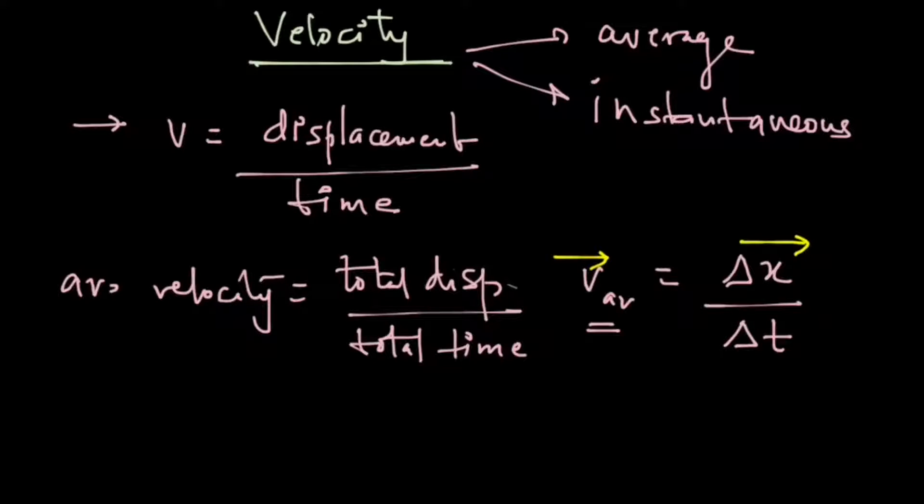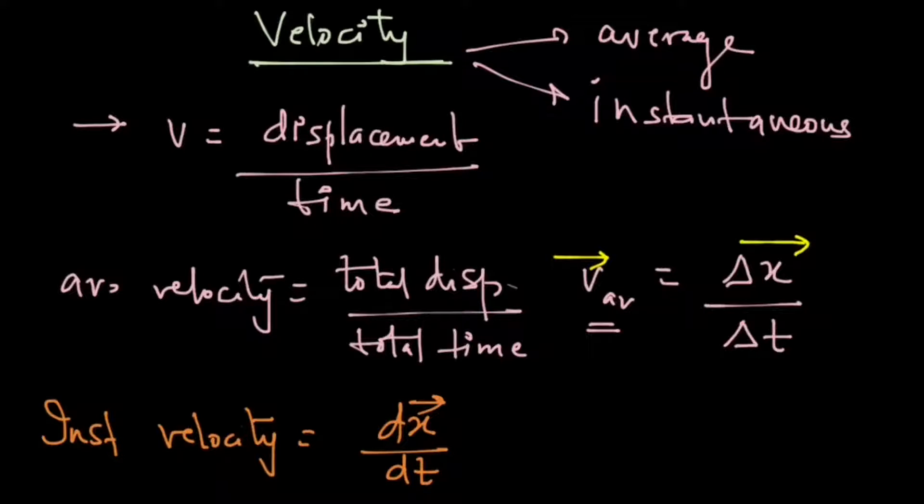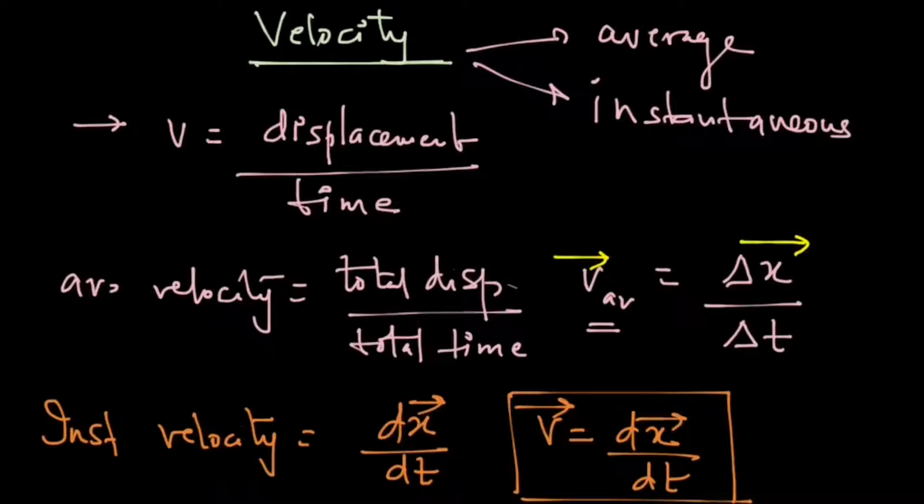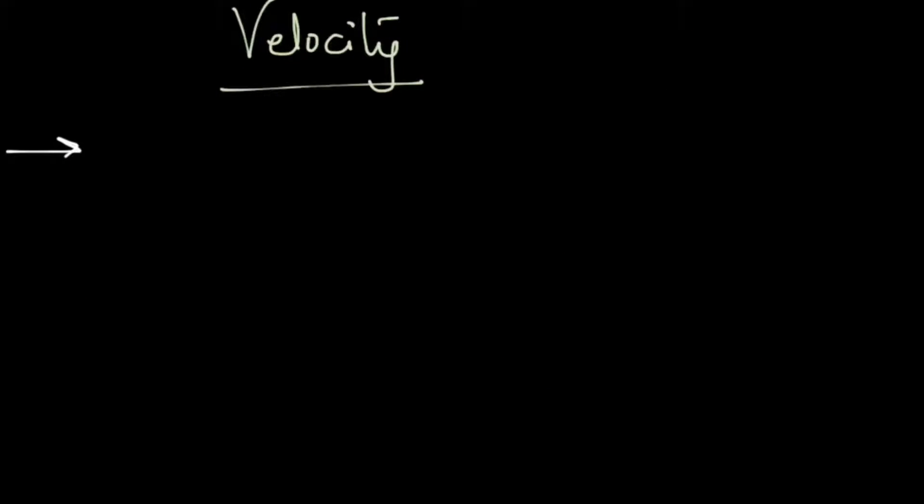And what is instantaneous velocity? So for instantaneous velocity, we define it as the rate of change in position, that is instantaneous displacement upon time, and so we write dx upon dt. So here is your first important equation: v equals to dx upon dt. So what are the properties of velocity? Velocity is a vector quantity. Like displacement, its SI unit is meter per second. Velocity, like displacement, can be positive, negative, or zero. Zero velocity means that the particle is at rest at that particular instant.